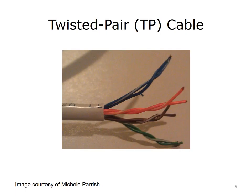STP cable consists of twisted wire pairs that are insulated and surrounded by a shielding made of a metallic substance, providing more protection against EMI. It is more expensive than UTP. A word you may encounter when dealing with TP is plenum. If TP cable is non-plenum, it will give off a toxic gas when it burns. Plenum cable will not, so it is required if the cable is run in ceilings or air ducts.